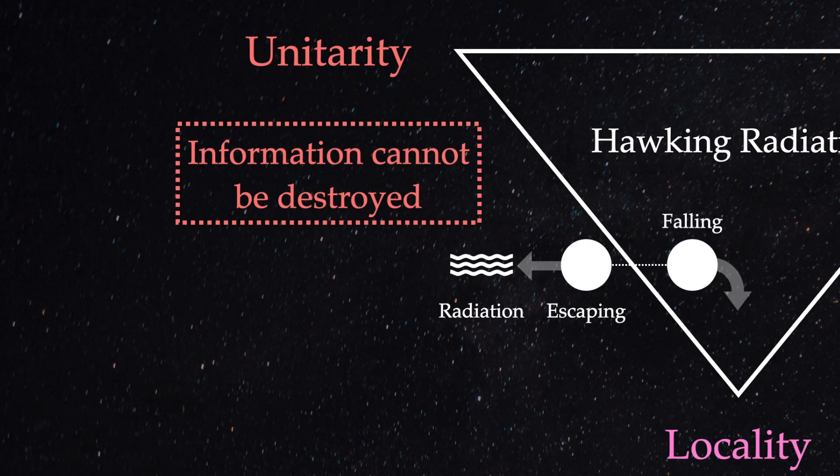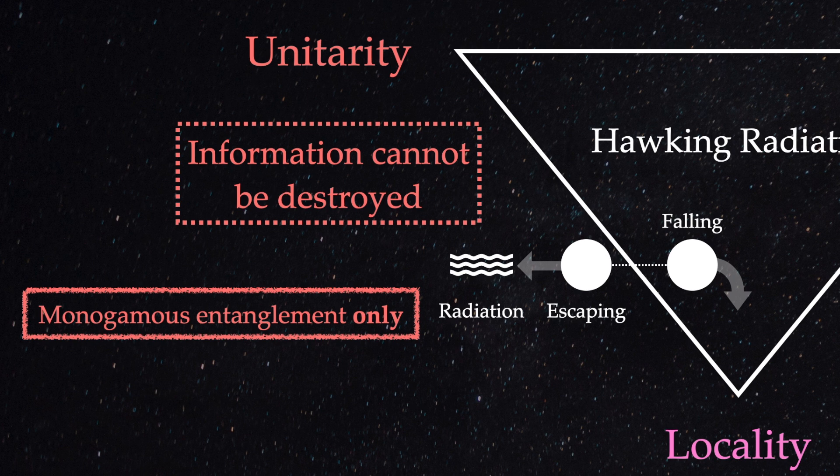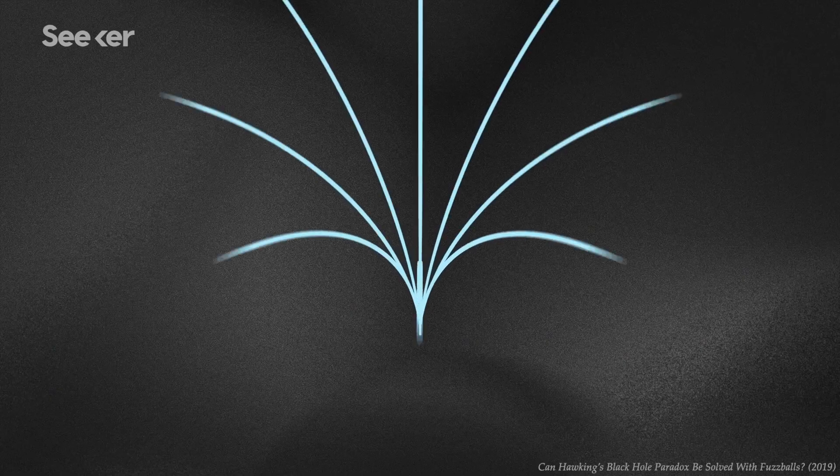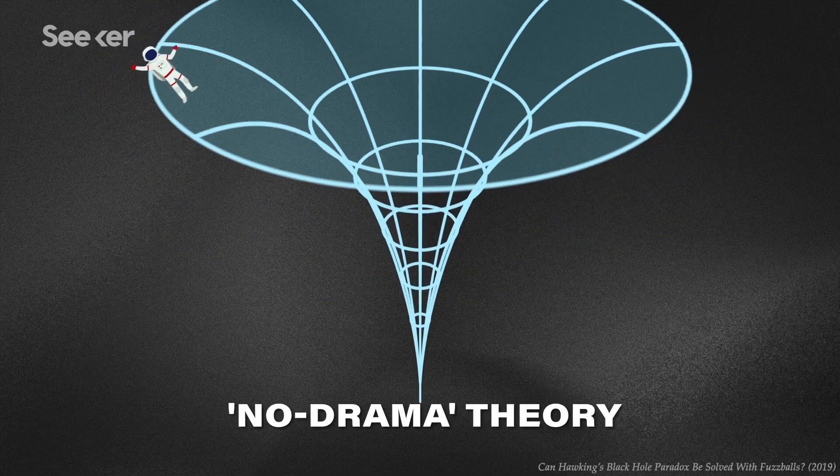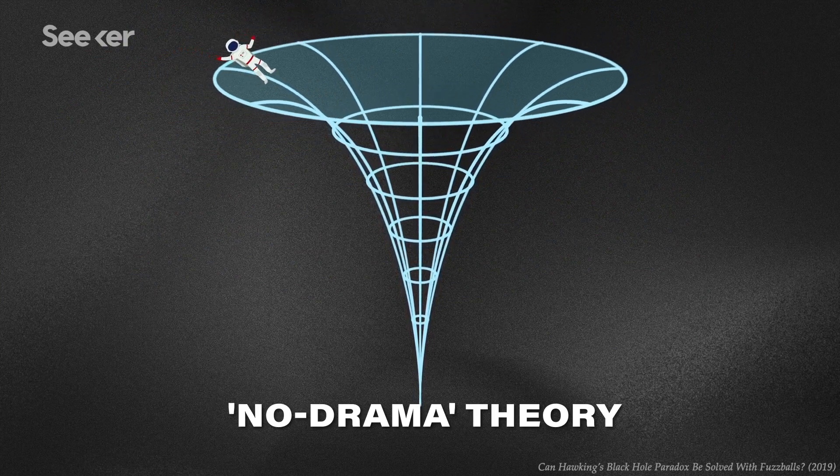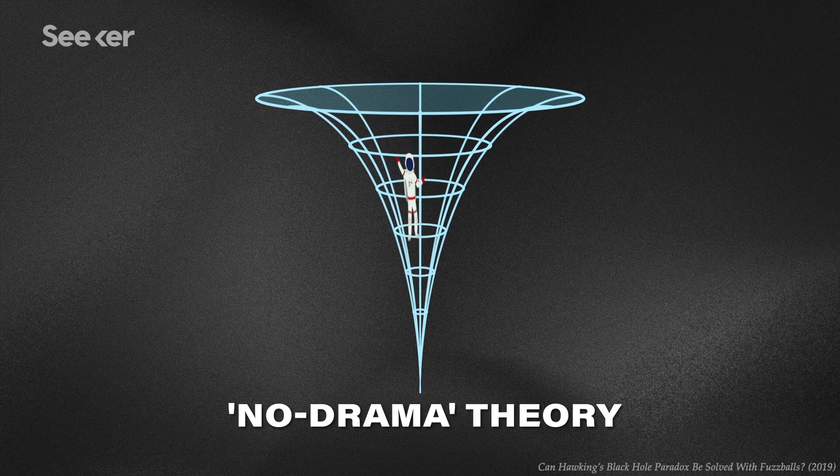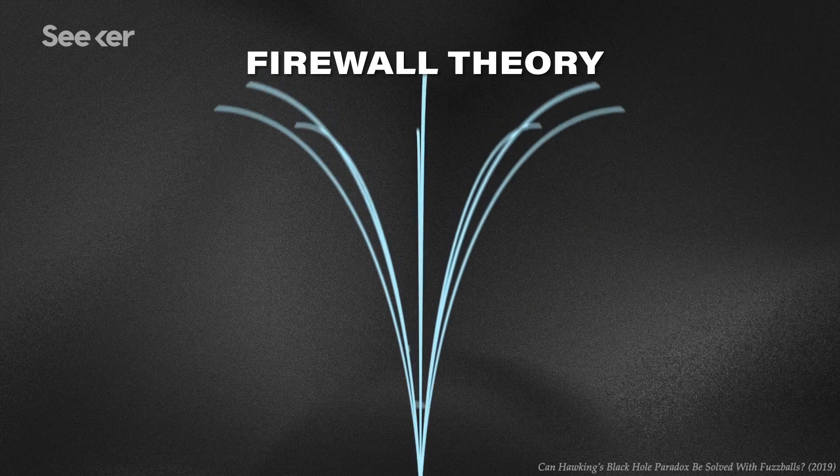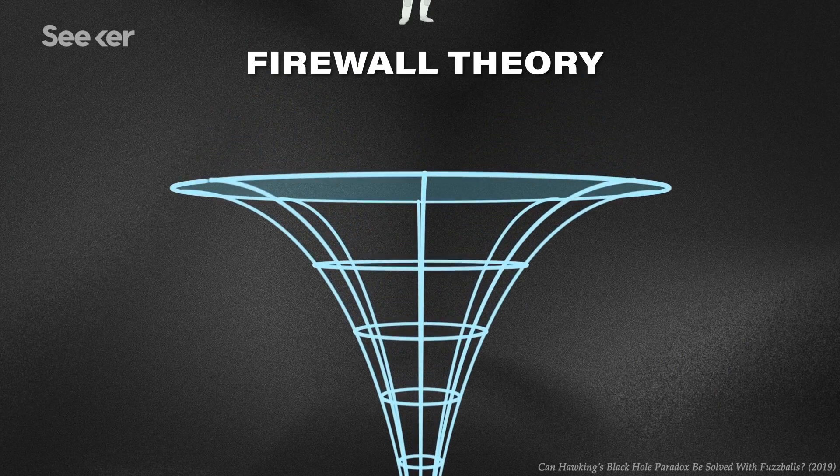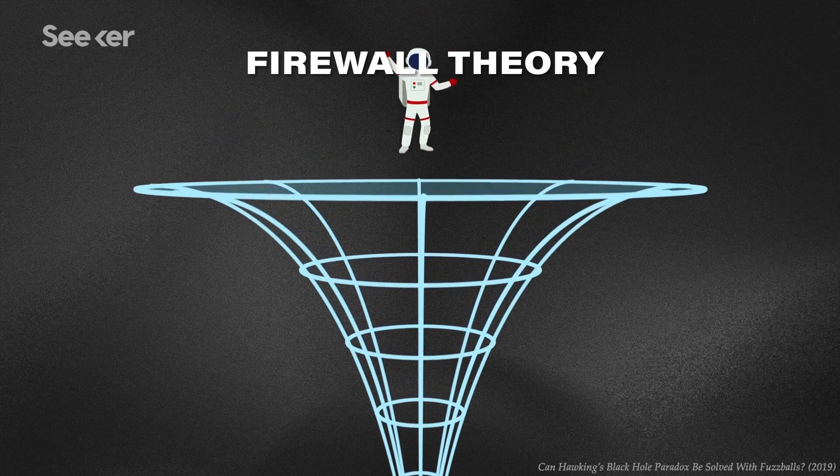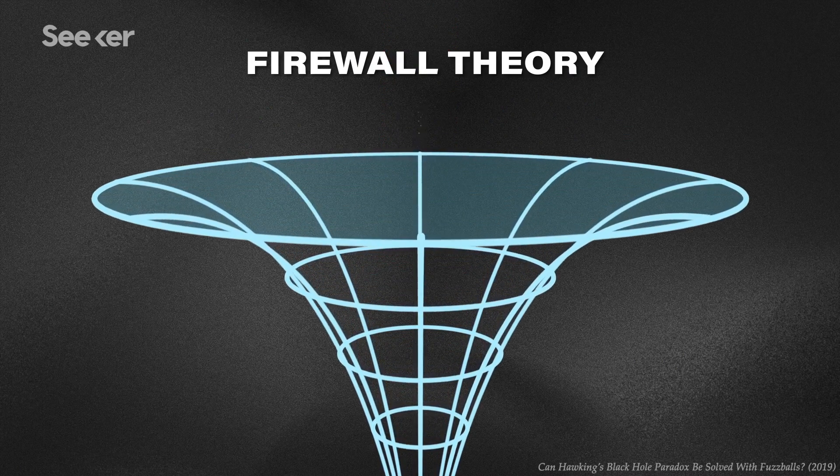Their idea centers on that principle of monogamous quantum entanglement. They resolve the necessary but forbidden entanglement polyamory by never allowing it to occur in the first place. The firewall hypothesis takes aim at the no-drama scenario predicted by GR. It proposes that something dramatic occurs at the black hole's boundary, violating the equivalence principle.